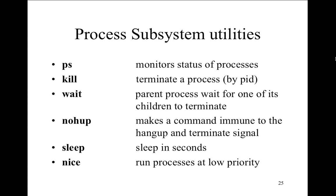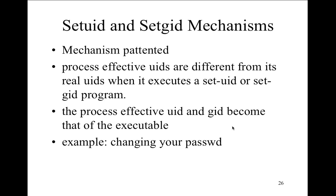Process subsystem utilities: PS shows the running current state of all processes; kill terminates a running process; wait holds a process; nohup makes a command immune to hangup or termination signals so it stays running; sleep; and nice runs a process at lower priority. If you have a huge backup job, using nice means it won't eat up all computer resources — it runs at lower priority and only gets CPU time when nothing with higher priority is running.